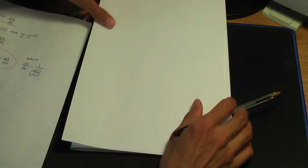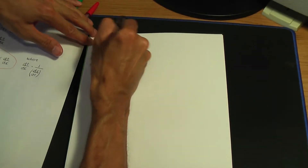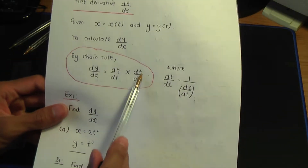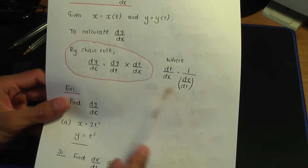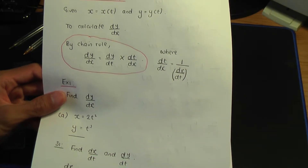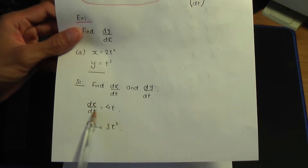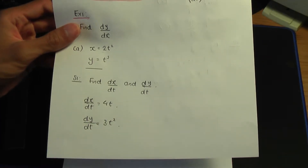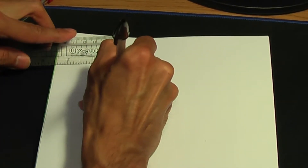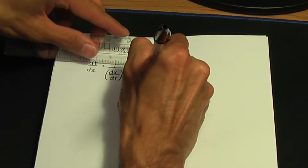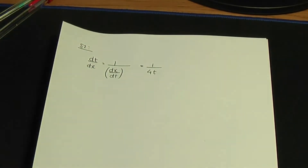Now step two. Going back to the chain rule, we need dt over dx, which is 1 over dx by dt. We know dx by dt — we calculated that as 4t in step one. So dt over dx equals 1 over 4t.